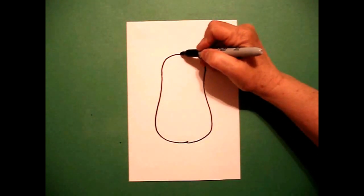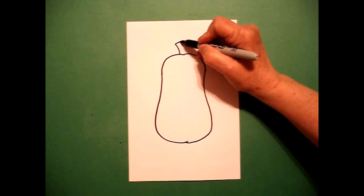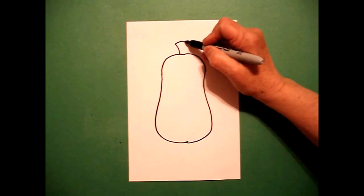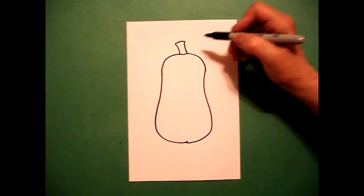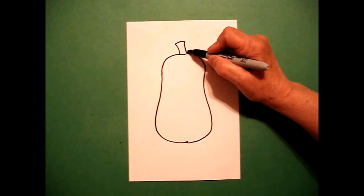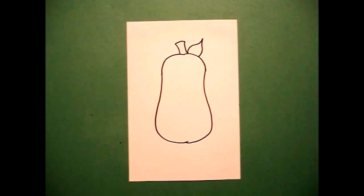I come up to the top, I draw a slightly curved line up, slightly curved line over, slightly curved line in, connect. On this side I draw a big curved line up, down, connect. And there's my pear.